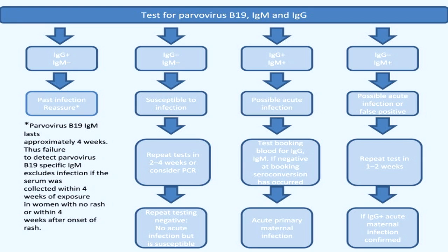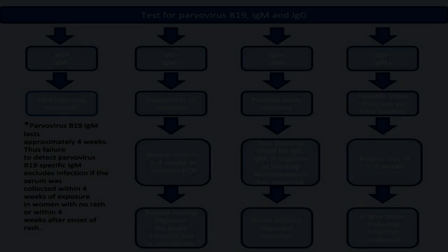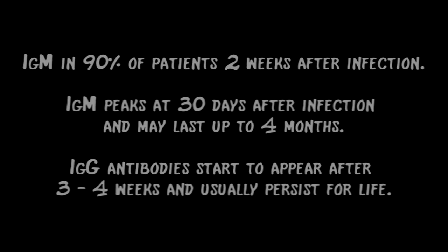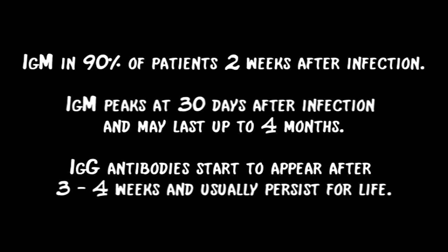There are a variety of diagnostic assays available to detect IgM and IgG in serum. Testing is available for women of childbearing age that may have been exposed. IgM is shown in 90% of patients two weeks after infection. IgM peaks at 30 days after infection and may last up to four months. IgG antibodies start to appear after three to four weeks and usually persist for life.